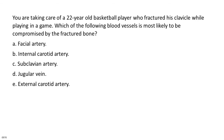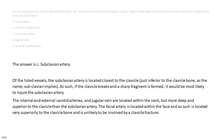You are taking care of a 22-year-old basketball player who fractured his clavicle while playing in a game. Which of the following blood vessels is most likely to be compromised by the fractured bone? A. Facial artery. B. Internal carotid artery. C. Subclavian artery. D. Jugular vein. E. External carotid artery. The answer is C, subclavian artery. Of the listed vessels, the subclavian artery is located closest to the clavicle, just inferior to the clavicle bone, as the name subclavian implies.